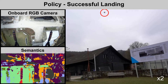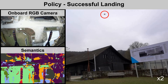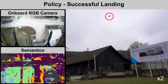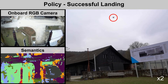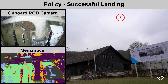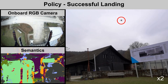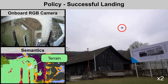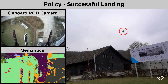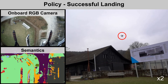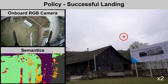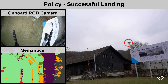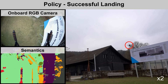Our policy is directly employed in a real mission without any additional fine-tuning, landing the robot safely on grass. The policy can deal with high levels of noise as well as the latency introduced by offloading the semantic and depth inference to the cloud.